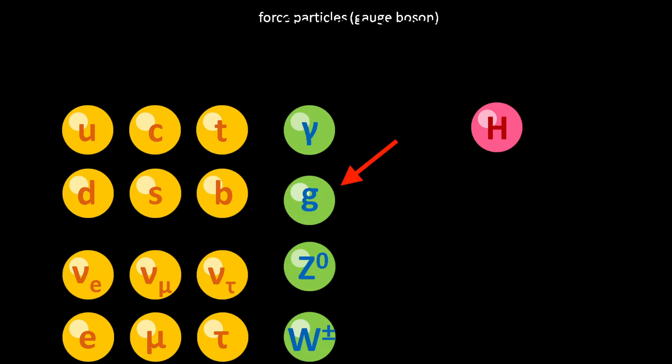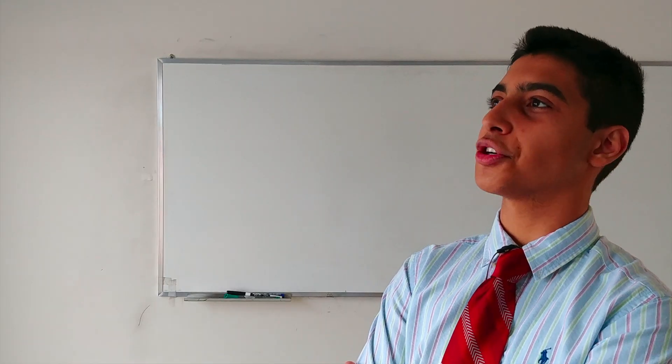That may seem a little weird — how can a particle carry a force? But think about this: light consists of photons. So what are photons if not force-carrying particles? We have four major fundamental forces in nature. The strong nuclear force, represented by the gluon. The weak nuclear force, represented by the W and Z bosons. The electromagnetic force, represented by the photon. And then the one we have no idea about — the gravitational force. The gravitational force is said to be carried by the graviton, but we have absolutely no idea about its existence. We have proposed theories, but nothing concrete.